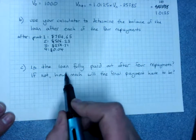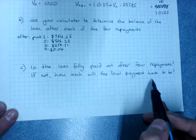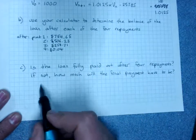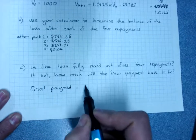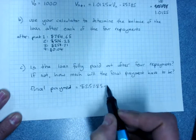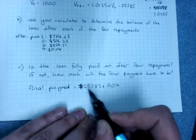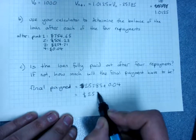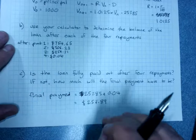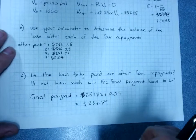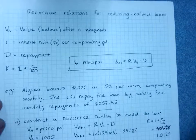The last question is: is the loan fully paid out after four repayments? No, because there are four cents left. This means we have to adjust the final payment: $257.85 + $0.04, making the final payment $257.89. It's important to fully finalize loans so you're not left with a tiny amount accruing extra charges. That is reducing balance loans with a recurrence relation.